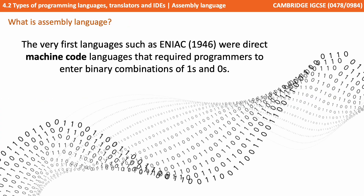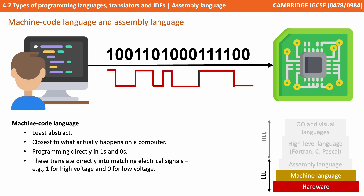The very first languages were direct machine code languages that required programmers to enter binary combinations of ones and zeros. These machine code languages were the least abstract — meaning they were the closest to what actually happens on a computer — with the programmer writing directly in binary ones and zeros, which translated directly into machine electrical signals. For example, a higher voltage represented a one and a lower voltage represented a zero.